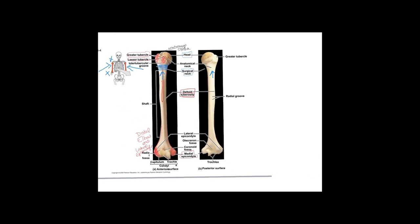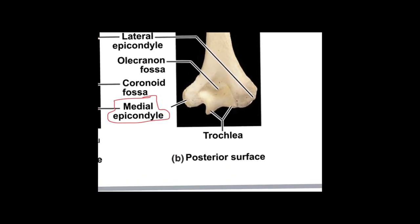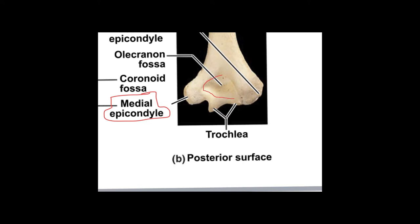On the posterior side of the humerus you can see the greater tubercle, but not the lesser tubercle or deltoid tuberosity. At the distal end on the posterior side, there's a large indentation called the olecranon fossa. That's where the ulna from the forearm fits in, creating the joint that allows you to bend your elbow — the ulna articulates with it.